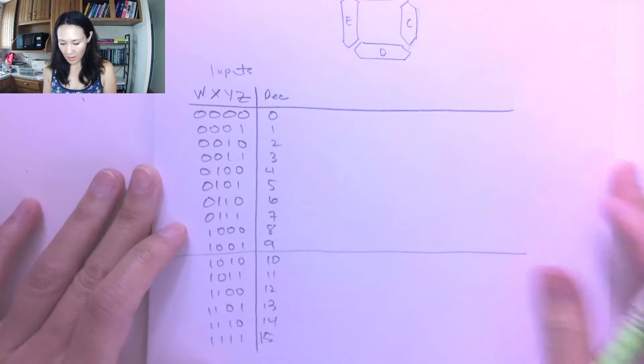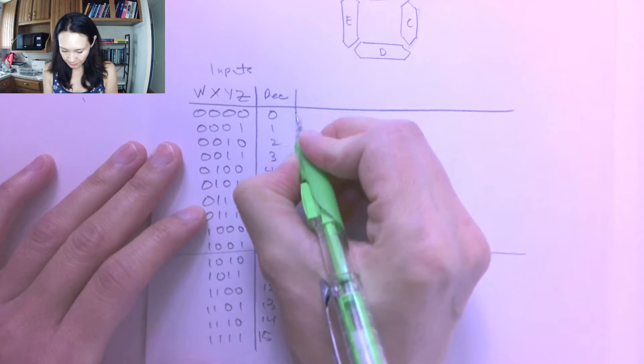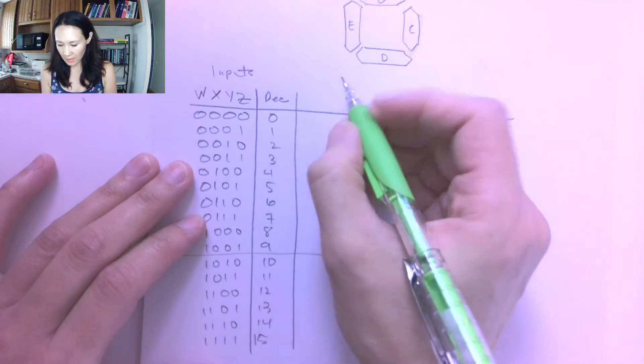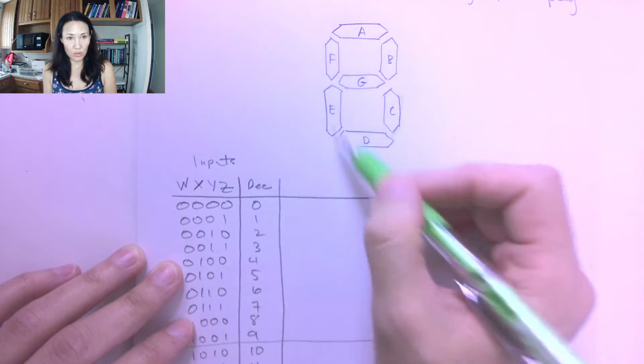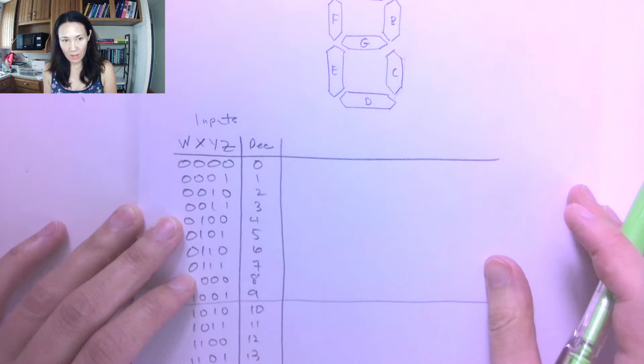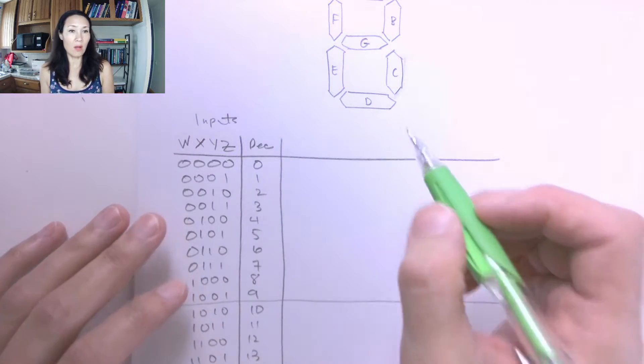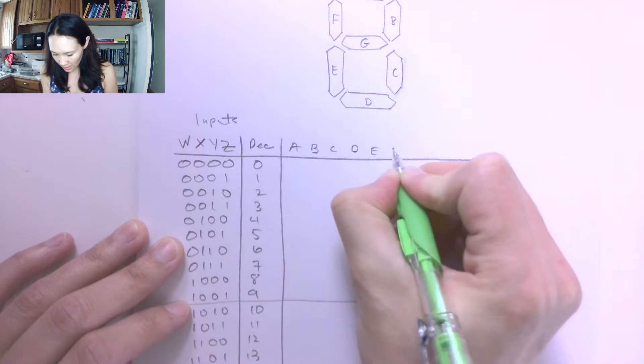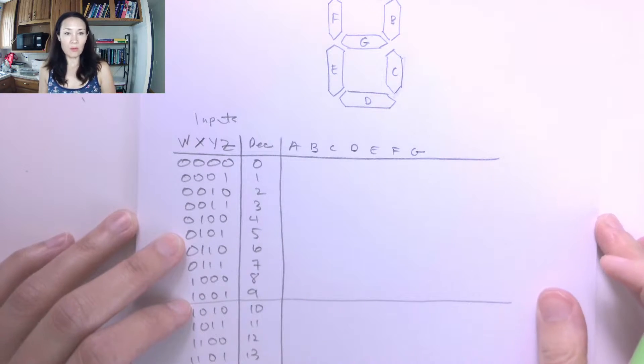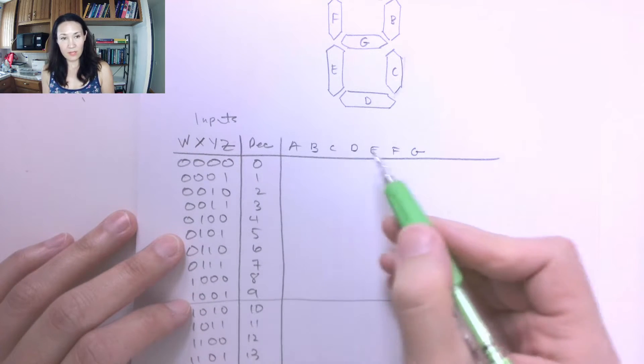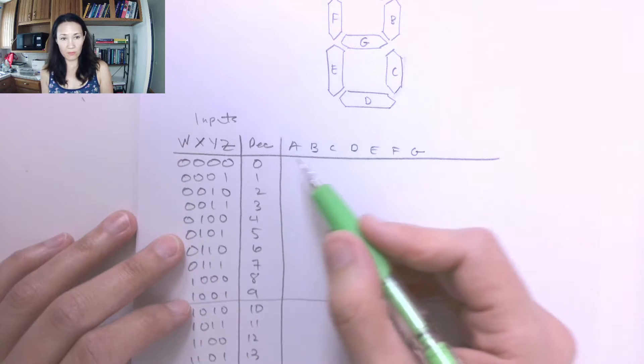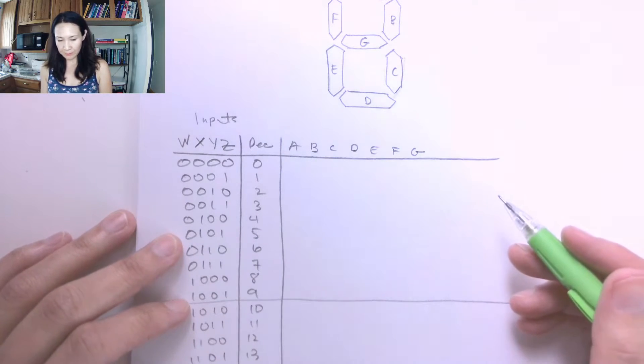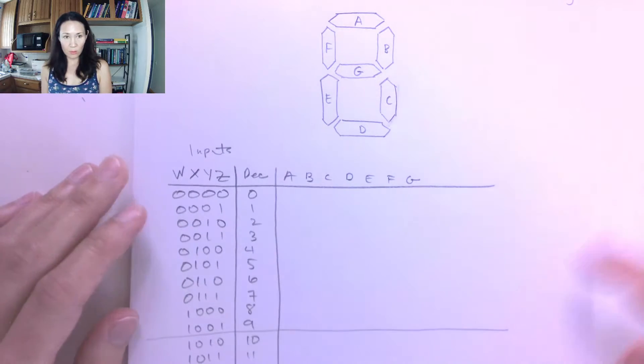So when we make our truth table for this 7-segment display, we're actually going to have 7 outputs, and I will label these A through G to correspond to which LED we light up. I'm just going to put a 1 for on and a 0 for off. So if we have A, B, C, D, E, F, G, this is going to be kind of a longer problem because all of these are outputs. We actually need 7 output functions in order to control this 7-segment display. So let's try to figure out what these outputs should be.